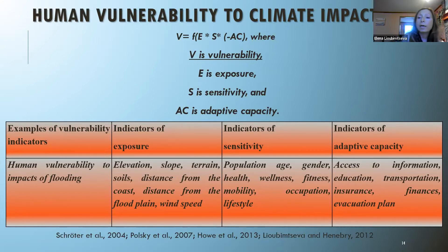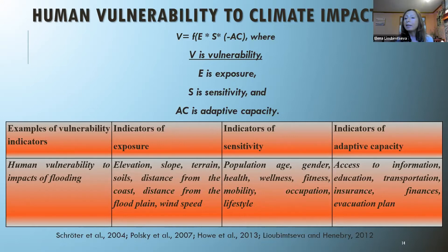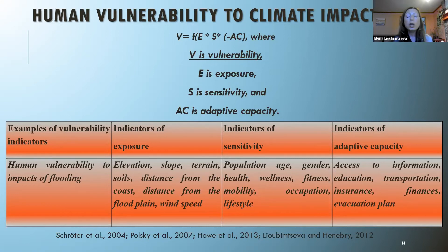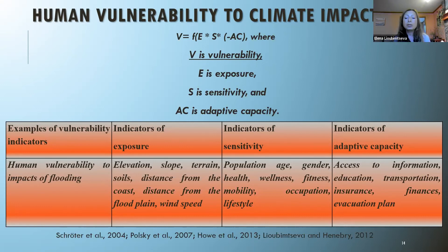Finally, the third dimension of vulnerability is adaptive capacity. Adaptive capacity essentially means all the assets and resources we have — either at the individual or community level — that we can use to cope with, avoid, or adapt to the impact. This can be anything from access to information, knowing your evacuation plan, having education, access to transportation, insurance, money, or other resources.